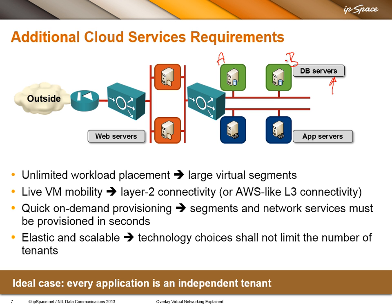The other thing virtualization people want is live VM mobility, meaning you can move a virtual machine from host B to host X while it is running. This is a great tool for both load balancing and maintenance purposes — instead of shutting down a physical server and killing all the VMs, you simply migrate the VMs off the server and do your maintenance work. To have live VM mobility, you need layer 2 connectivity between the virtual machines and between all the hosts that run those virtual machines.